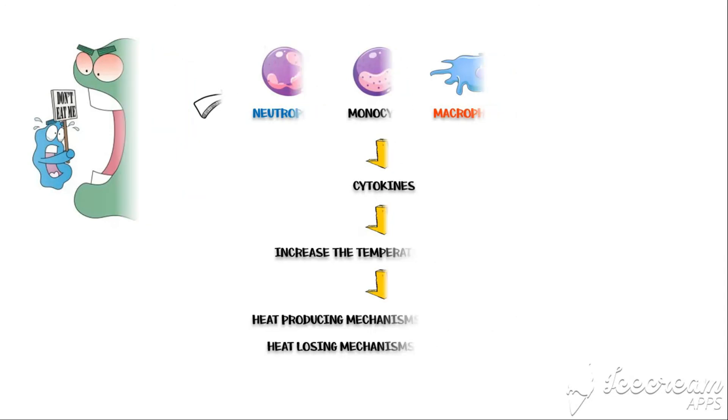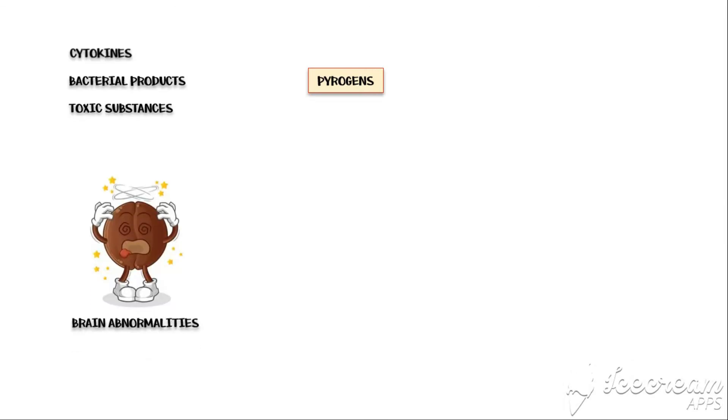In addition to cytokines, certain bacterial products and toxic substances can also induce fever. All these types of fever-inducing agents are collectively known as pyrogens. Brain abnormalities induce fever by causing direct impairment of hypothalamic function. As a result, the temperature set point will be raised and the person will get fever.